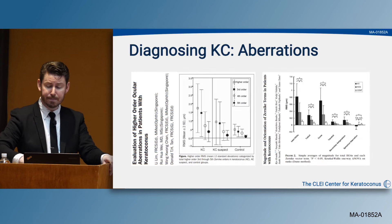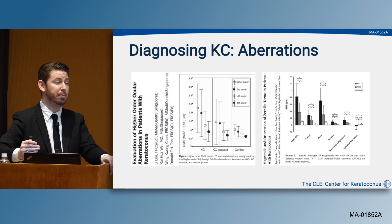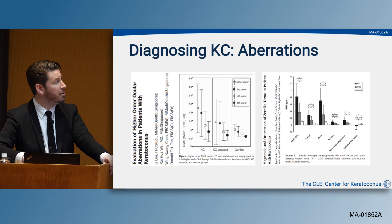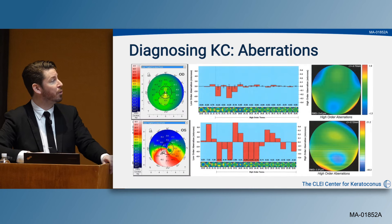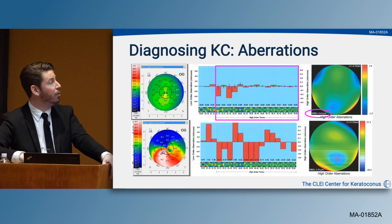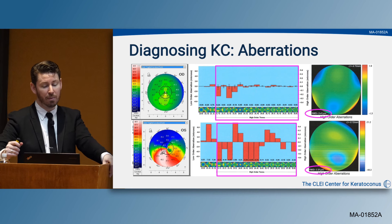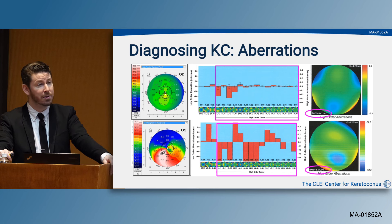Another way to diagnose the disease is to look at aberration profiles. Kosaki and Lim's 2007 papers demonstrated differences in aberrations between normal corneas, early keratoconus, and true keratoconus — specifically an elevation in coma and trefoil. Here's an example from our clinic: a normal cornea on top with an RMS of about 0.4, versus the keratoconic eye on the bottom showing elevated higher-order aberrations, specifically coma and trefoil, with an RMS of about 6 — significantly out of the ordinary.